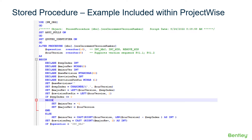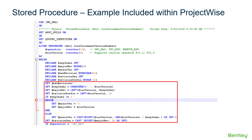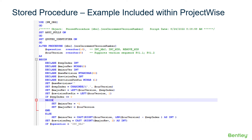Reading further into the script, from the BEGIN statement, the script declares variables representing the major revision number, the minor revision number, and the prefix value. Additionally, it creates variables for the new revision number and the sequence. Next, it parses the current version number passed as an input and assigns each part to its appropriate variable, then processes the request based on the operation that was submitted.